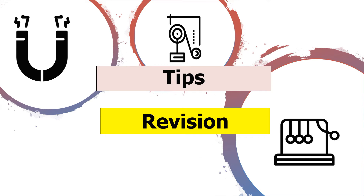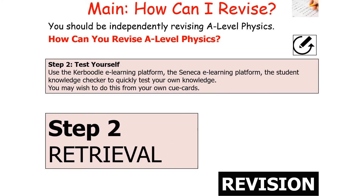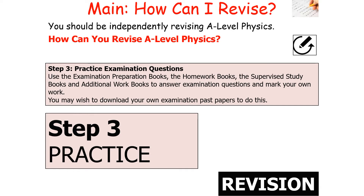How should you be revising for your AQA A-level physics examinations? Step one: learn the key facts. Use your revision guides, class workbooks, student prep notes, and textbook to learn the key ideas of the course. You may wish to make mind maps or write out notes to gain this knowledge. Step two: test yourself. Use the Caboodle e-learning platform, the Seneca e-learning platform, and student knowledge checkers to quickly test your own knowledge. You may also use cue cards for retrieval practice.